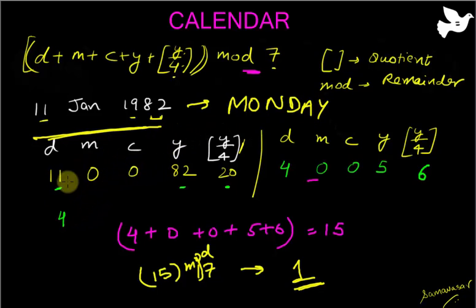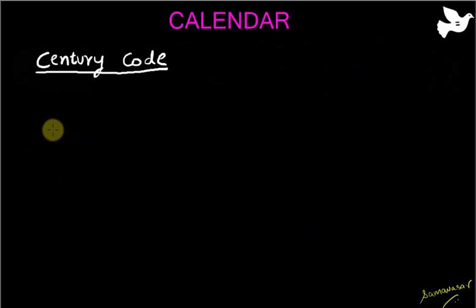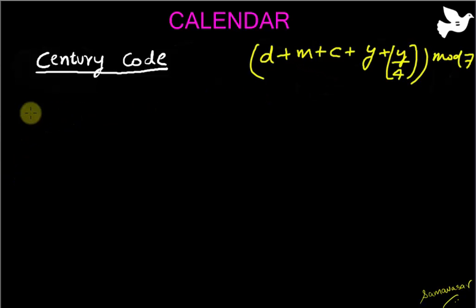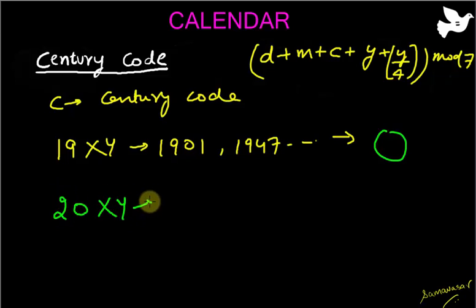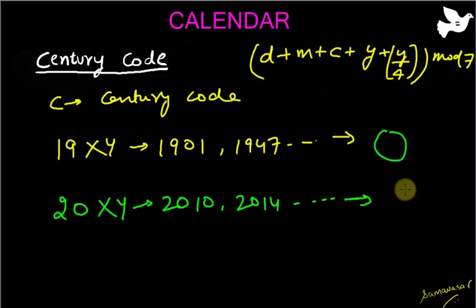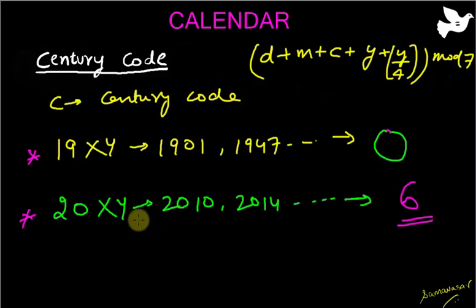For each variable you find the corresponding number from the date given and compute the answer, and depending on the answer you get the day. Now let's find out exactly how these variables are determined. C is the century code: for years of the form 1901, 1947, etc. — 20th century — the century code is 0. For the 21st century, years like 2010, 2014 etc., the century code is 6. In the exam, mostly you will be asked questions of only these two kinds of dates.